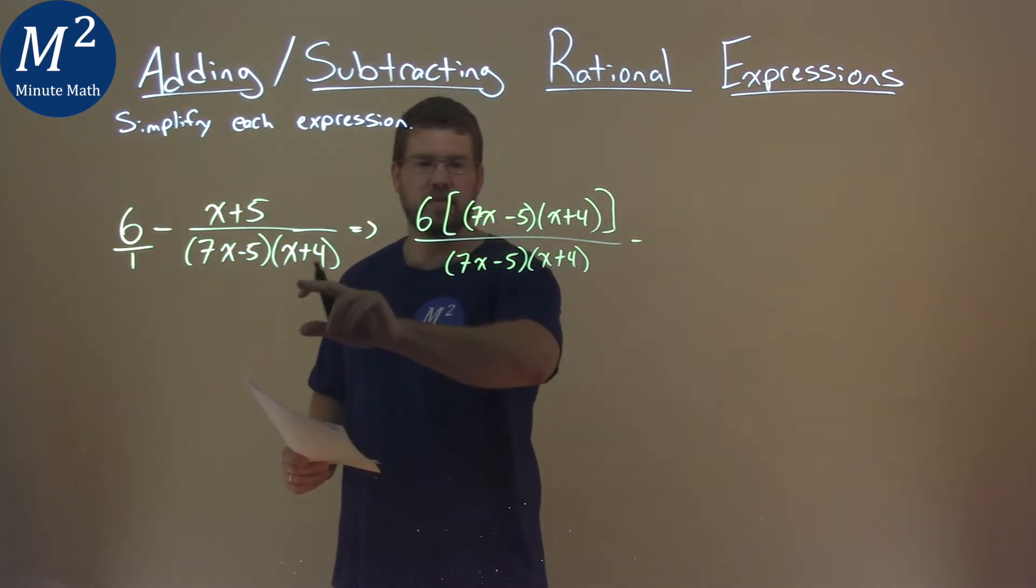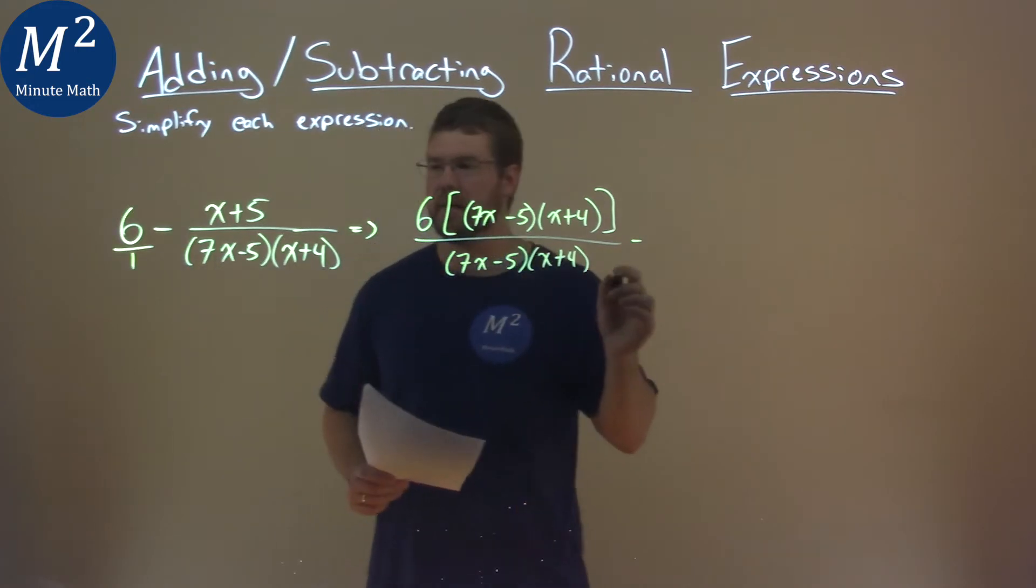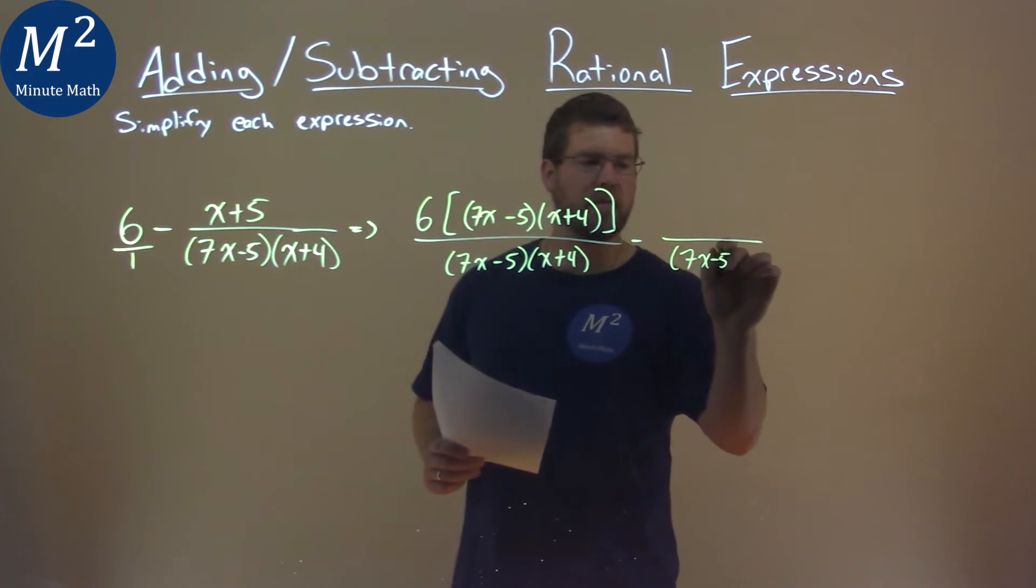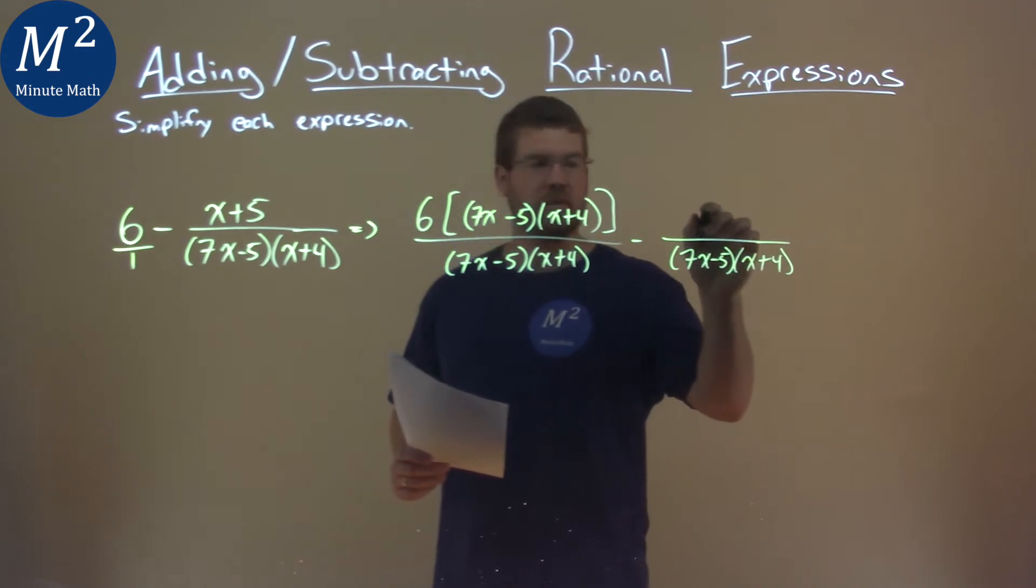The right-hand side stays the same, it's the same denominator. There's a 1 here, 6 over 1, but we don't need to write that. We have 7x minus 5 and x plus 4, and the numerator we just have x plus 5.